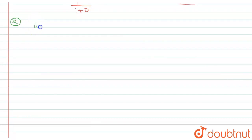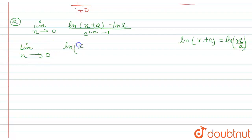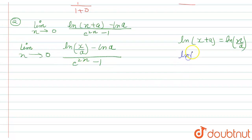The second part is: limit x tends to zero, ln(x plus a) minus ln a, upon e raised to the power 2x minus one. We can use the logarithm property to write ln(x plus a) minus ln a as ln of (x plus a) over a. So ln(x/a plus a) simplifies, and we know ln(x plus a) minus ln a equals ln(x/a plus 1).